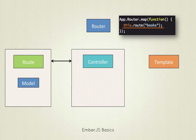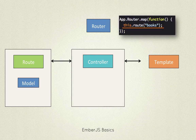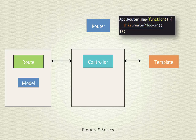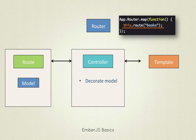Now the controller object has this model. One of the main responsibilities of a controller is to grant access to this model to the template. But that's not all - otherwise, what would be the purpose of a controller if we could just use the route object? A controller can also decorate the model by introducing new values or converting data to a specific format for presentation.